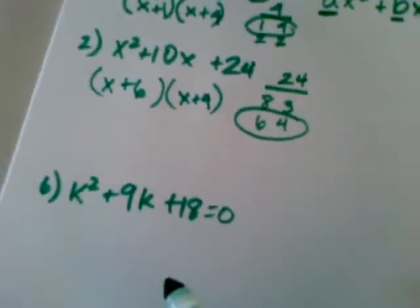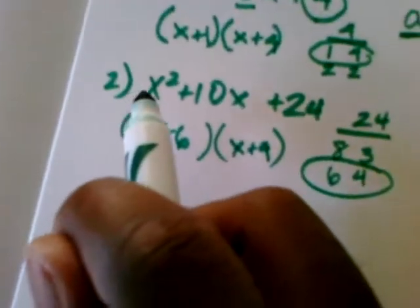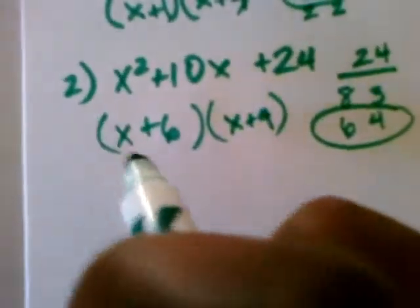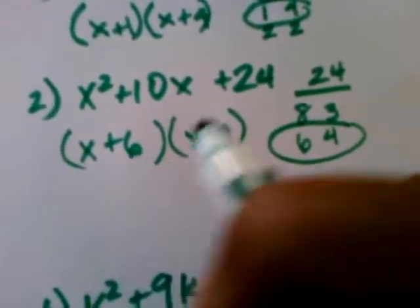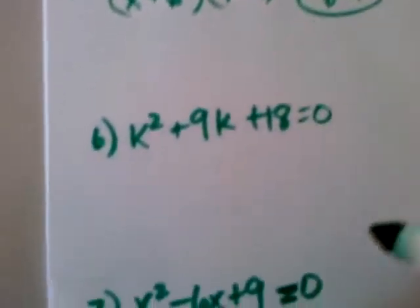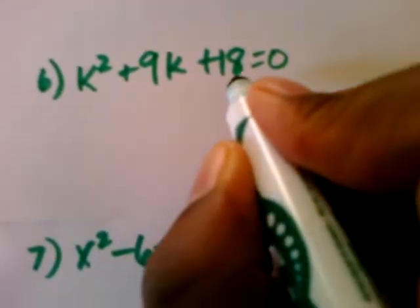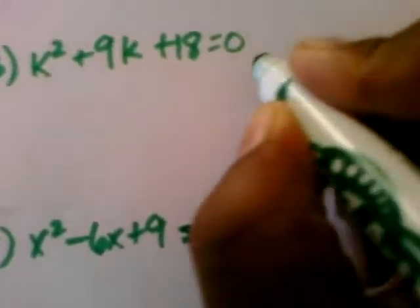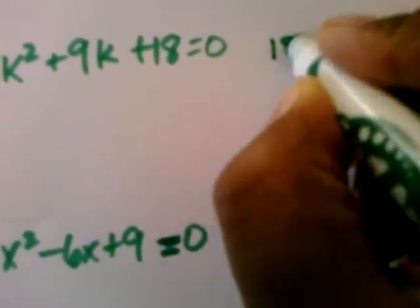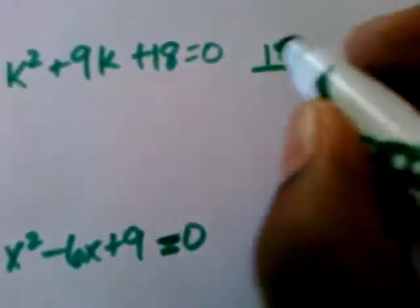Now, remember, you can only use this method when A equals 1. And so since there is no A here, the coefficient there is 1. It's implied. Let's take a look at if we want to solve them. So if I want to solve them, I'm still going to look at that last term here, 18.